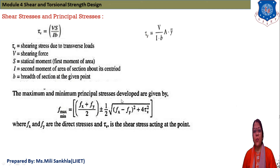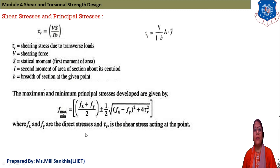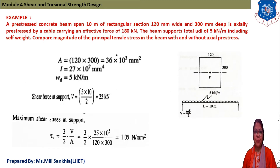Next, we find the maximum and minimum principal stresses. The equation is: f_max and f_min equals (f_x + f_y)/2 ± (1/2)√[(f_x − f_y)² + 4·tau_v²]. Here f_x and f_y are direct stresses (also written as σ₁ and σ₂), and tau_v is the shear stress.